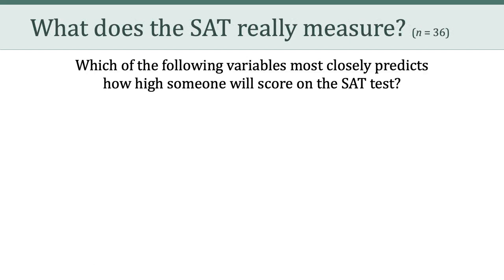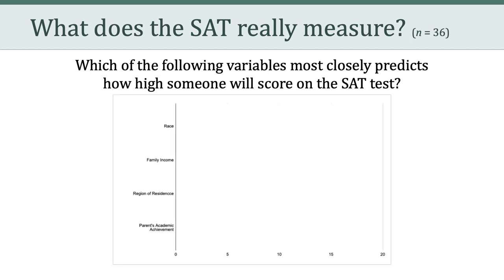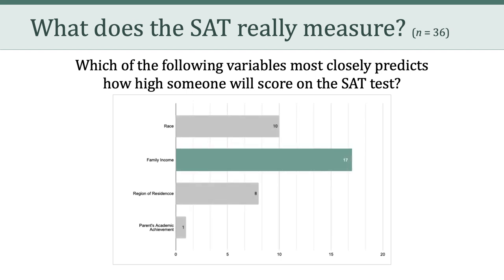One of the questions on the quiz was about the SAT — the standardized test often used in college admissions in the United States. This particular item gets at the issue of what the SAT really measures. The item asked: which of the following variables most closely predicts how high someone will score on the SAT? The four choices were: one, race; two, family income; three, parents' academic achievement; and four, region of residence. This is the distribution of how everyone who has responded to this item from the past few classes has scored. The correct answer was family income, which about 47% of all students have gotten correct.